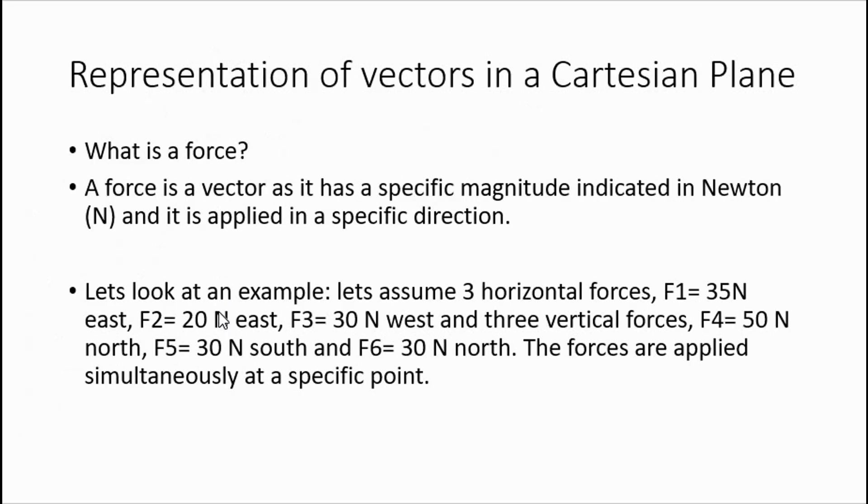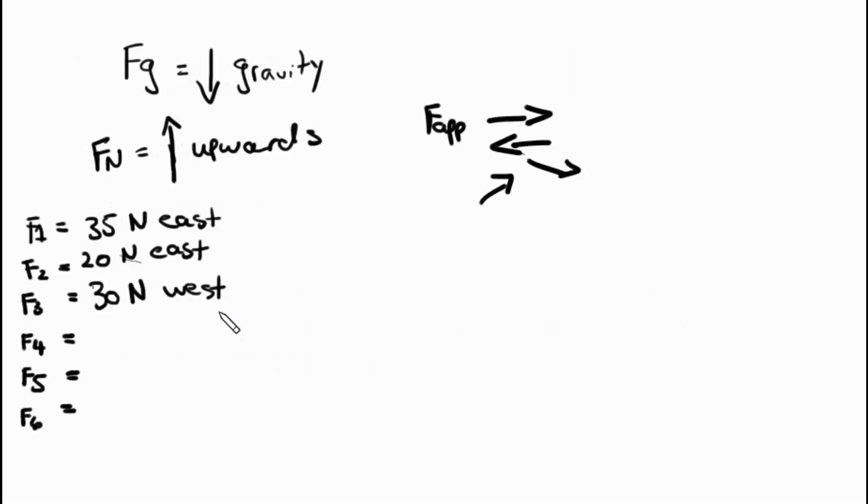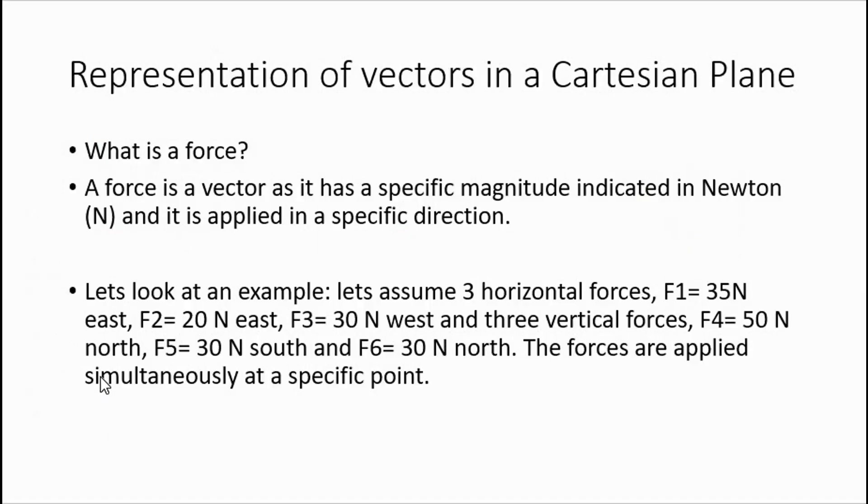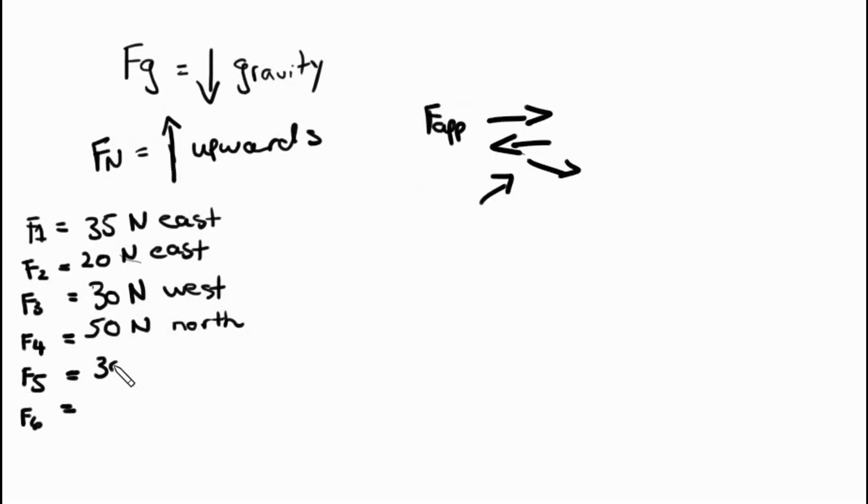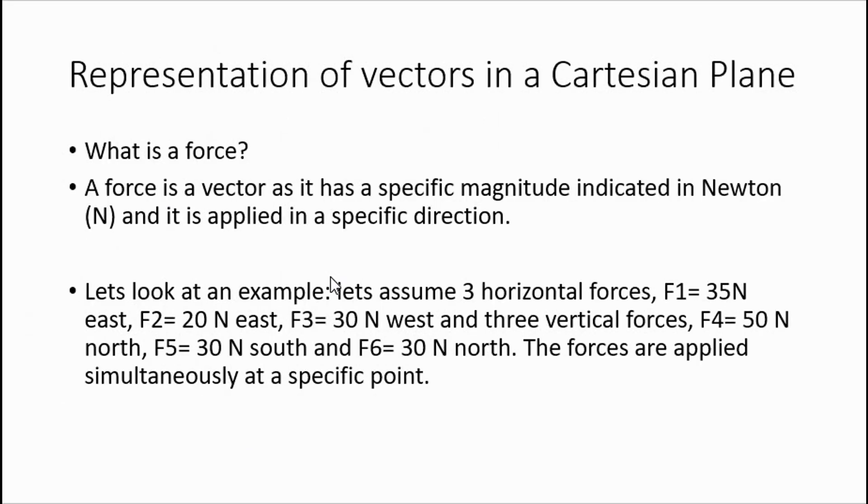Then there's three vertical forces. F4 was 50 newtons north - that's going upwards. F5 was 30 newtons south. And F6 was 30 newtons north as well. There we go, all of my information nicely neatly drawn on the side so I know what I'm working with.